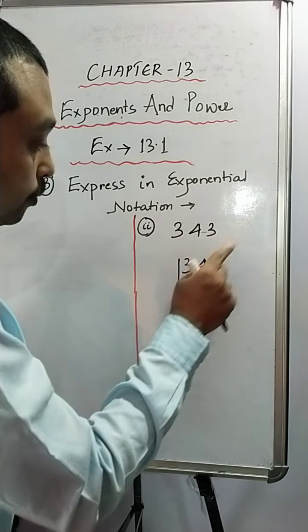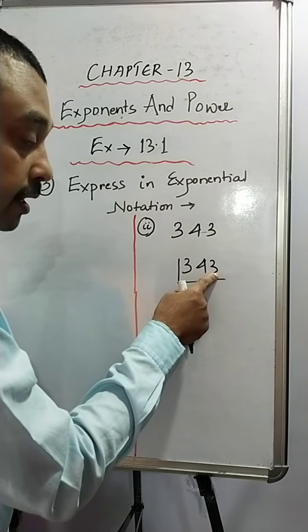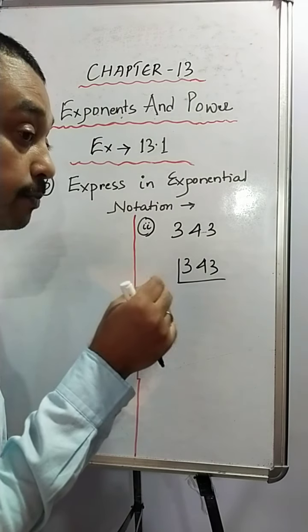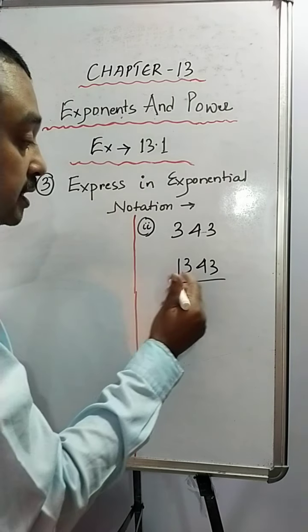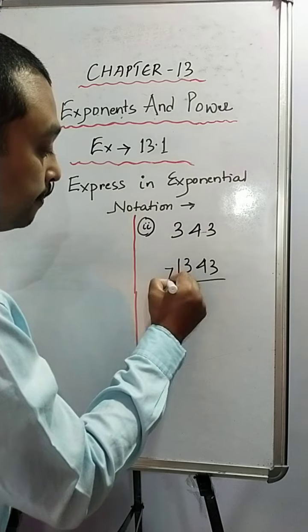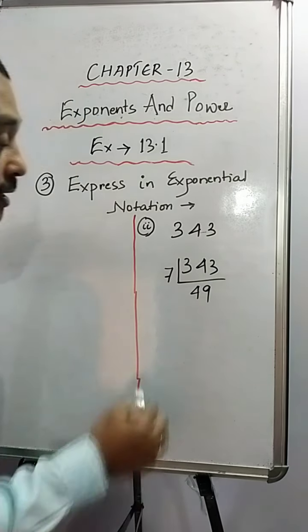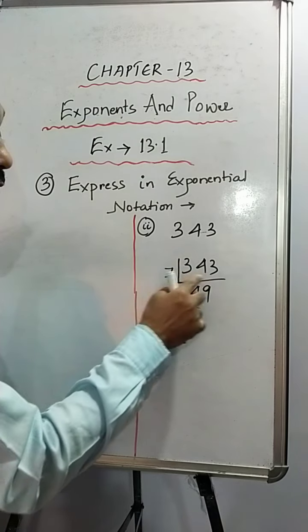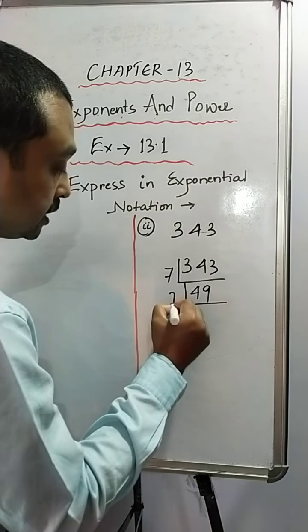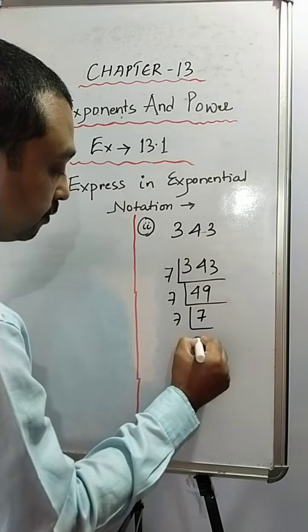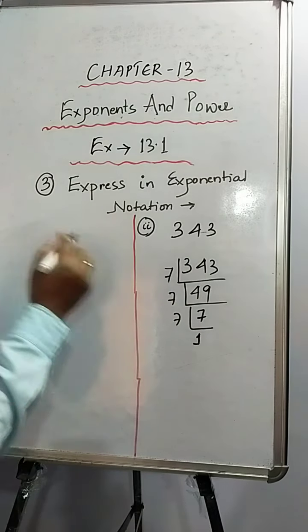So it is divisible by 5? No, because the last digit is 3. Now, what is the next prime number? 7. So let me see, 7 is divisible by this or not? It is divisible by 7, so answer will be 49. 7 into 49 will give you 343 students. Now, that is 7, 7 is 49, 7 ones are 7. So how to write this?